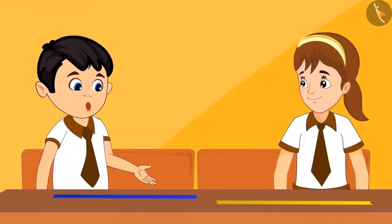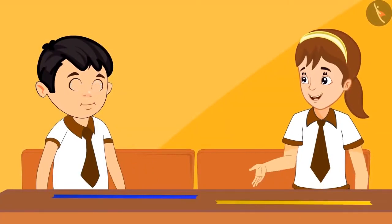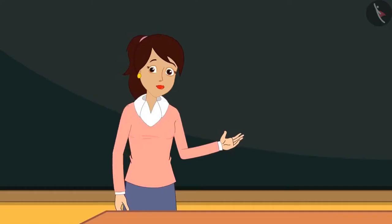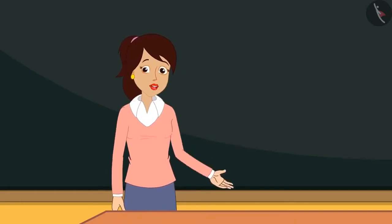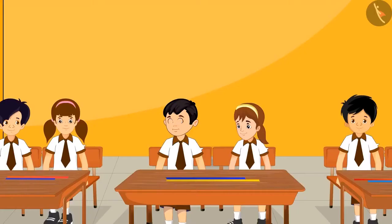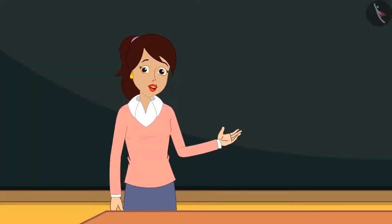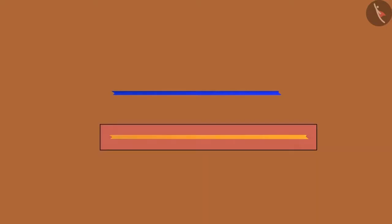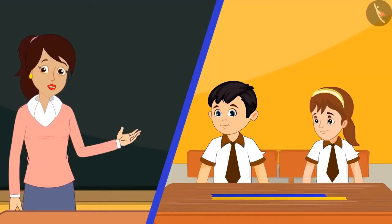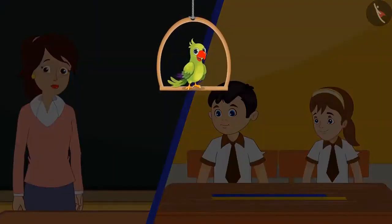Chotu shows his ribbon to Neha, who shows hers in return. The teacher asks them to match their ribbons. Both brought five hand span long ribbons, but Chotu's ribbon is shorter than Neha's. The teacher asks if Chotu and the children know why this happened.